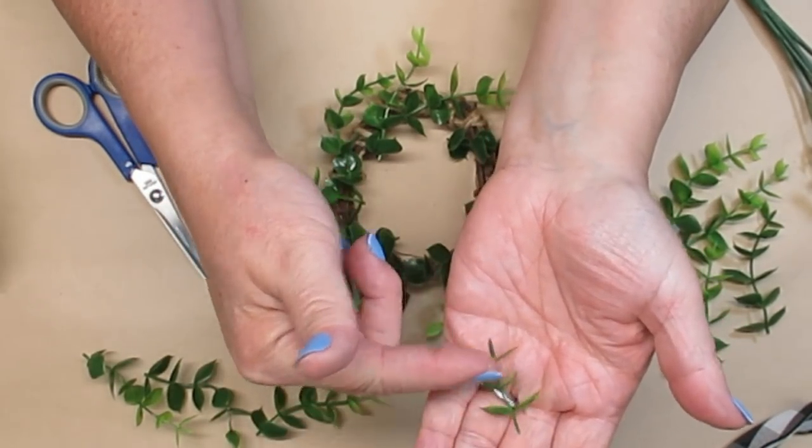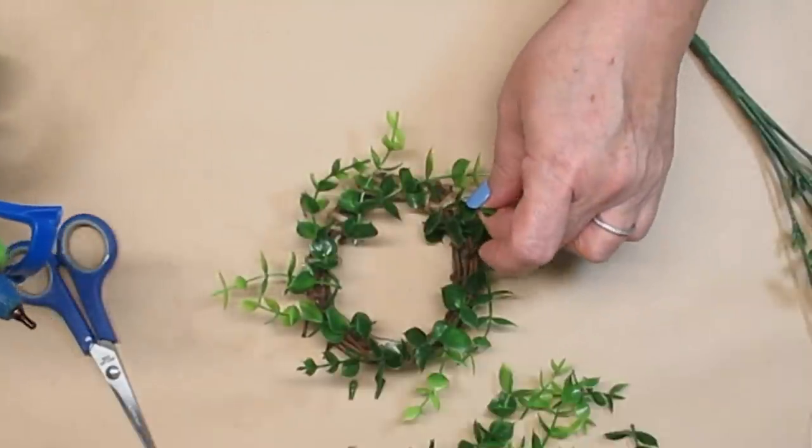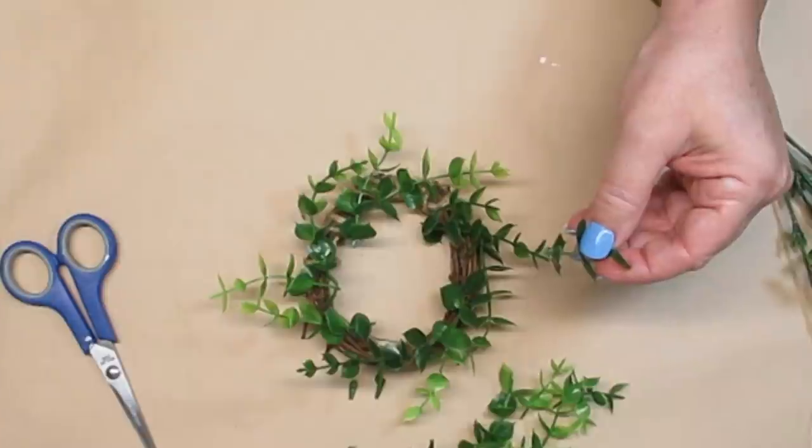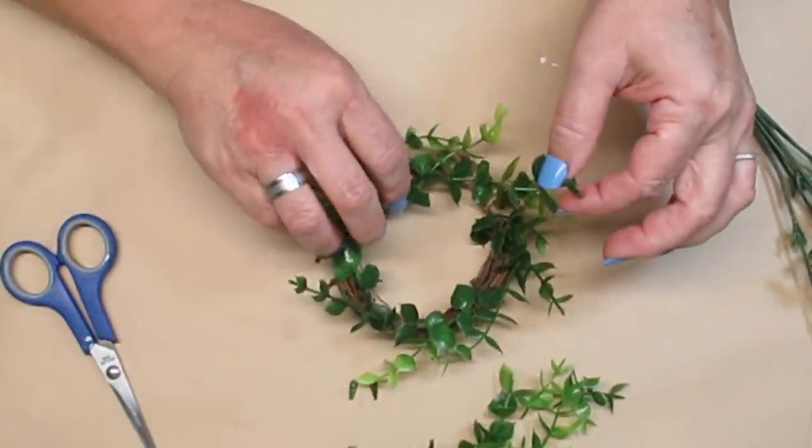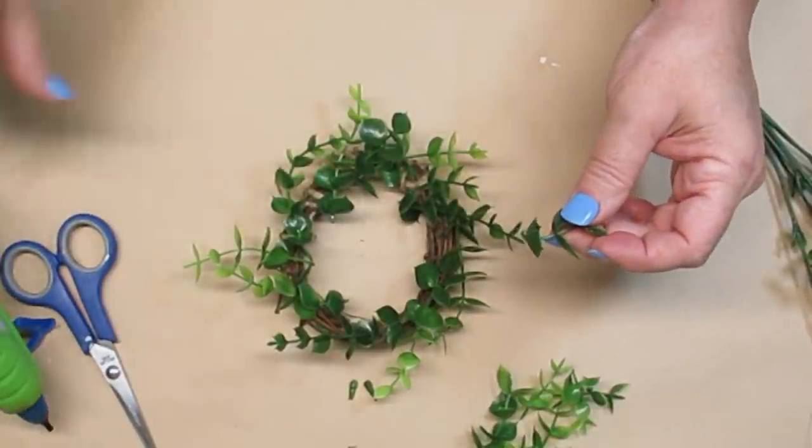I'm going to take the next set of branches and cut them in half. So I have three on each stem. I'll use these pieces to start filling in the gaps. And I always like to start with the larger leaves first and then use the smaller ones to fill in at the end.